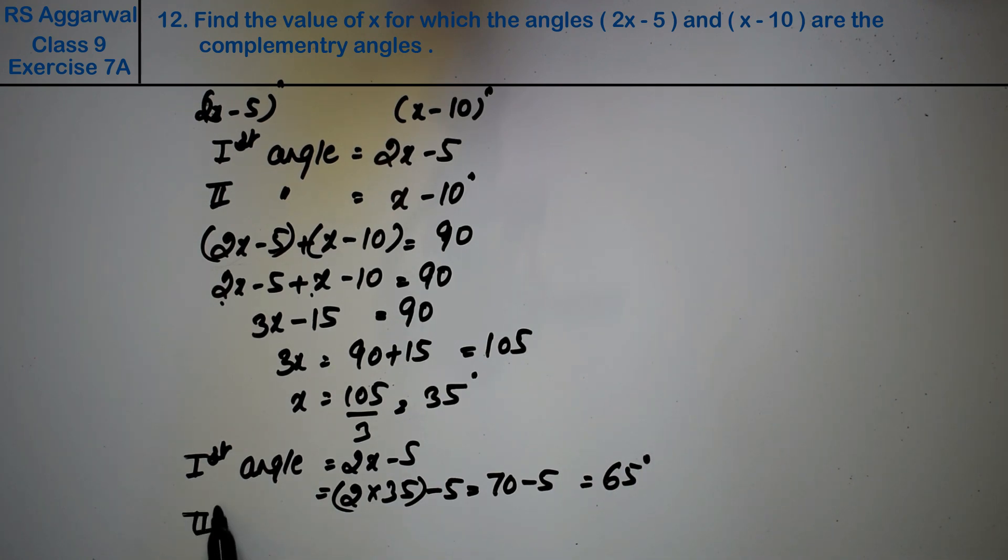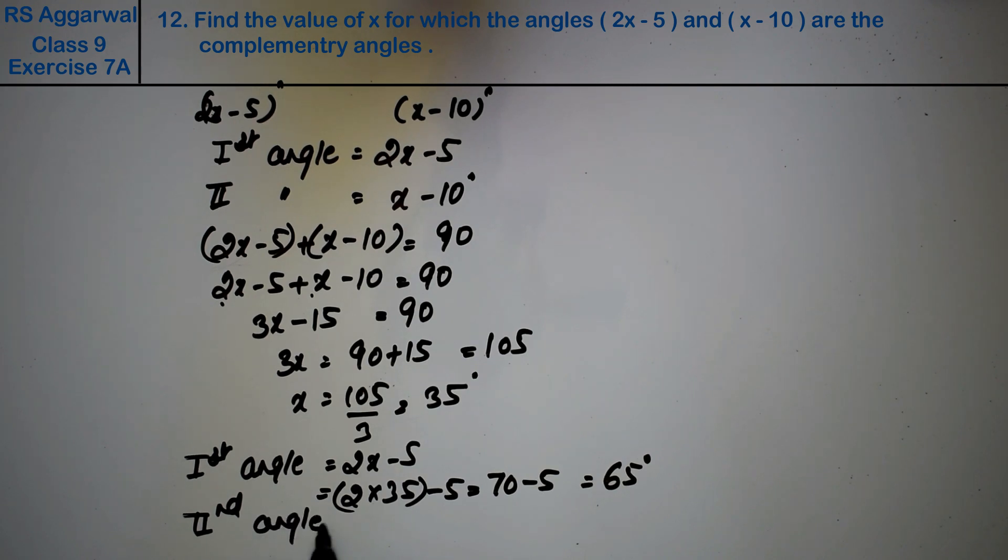The second angle is x - 10 degrees, which equals 35 - 10 = 25 degrees. That is the answer.